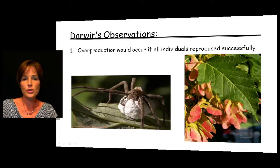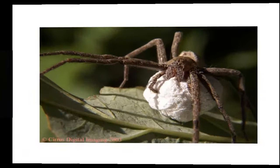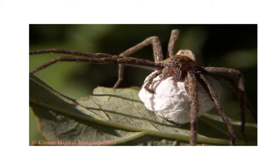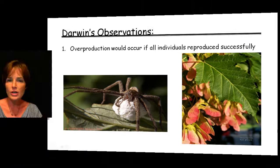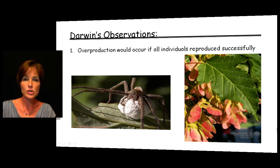There were numerous observations that Charles Darwin made. The first one was that overproduction would occur if all individuals reproduce successfully. The idea here is that there are way too many offspring from individuals. You've all seen the spider with the egg sac when it ruptures — there are just millions or hundreds of little spiders. We've seen the seeds on a tree, the massive amounts of pollen that come from pine trees. Organisms in general produce way too many offspring, and if every one of those offspring were to survive, we would very quickly be overrun.